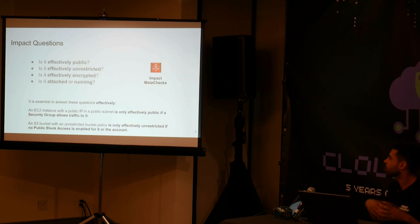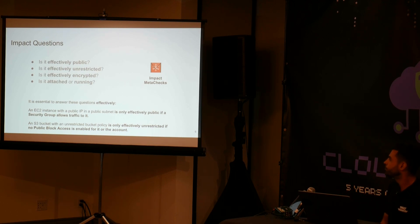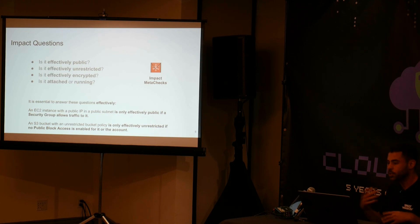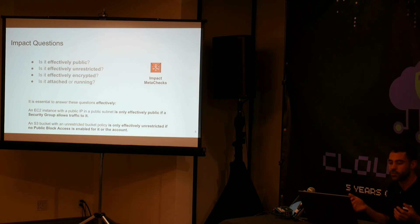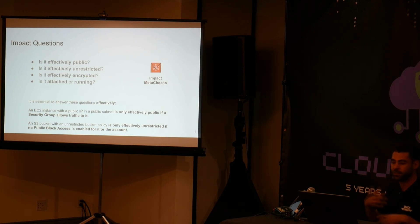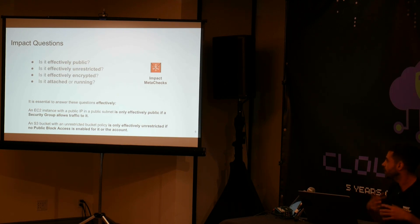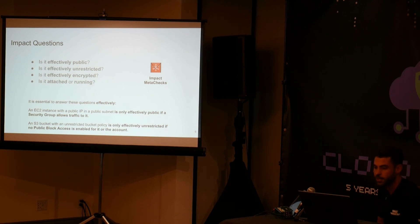We also have properties or questions we can answer about the affected resources that are independent from the resource type — like if it's public, if it's unrestricted, if it's encrypted. The challenge is how to answer these questions not only based on the affected resource itself, but also based on everything connected to it. For example, an EC2 instance with a public IP in a public subnet will only be effectively public if there is a security group attached that allows traffic. Or an S3 bucket with a fully unrestricted bucket policy will only be effectively unrestricted if there's no public access block enabled for the bucket or the account. The goal of this tool is to provide the answer to these questions in a standardized way so you can easily define the real impact of your security findings.